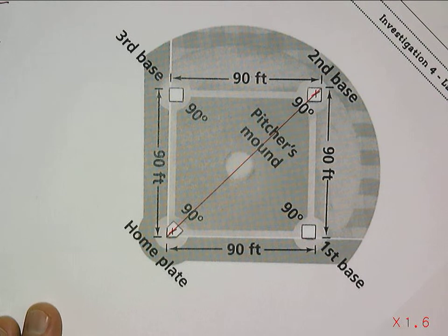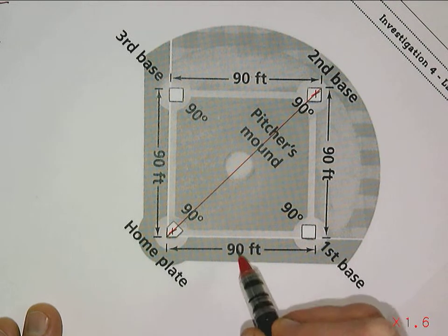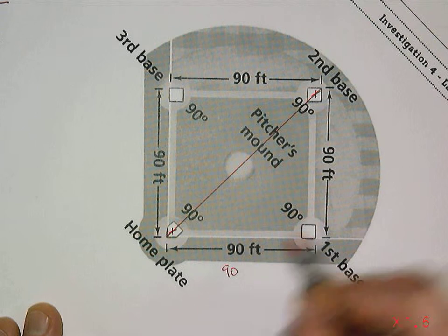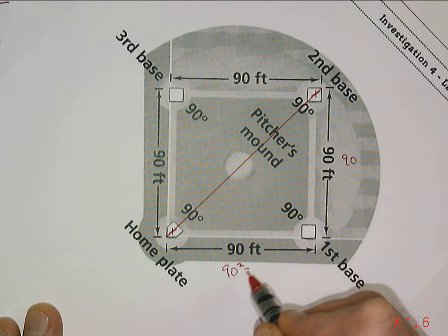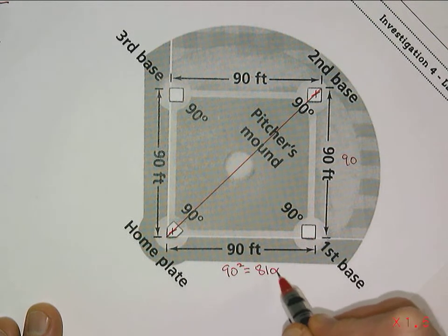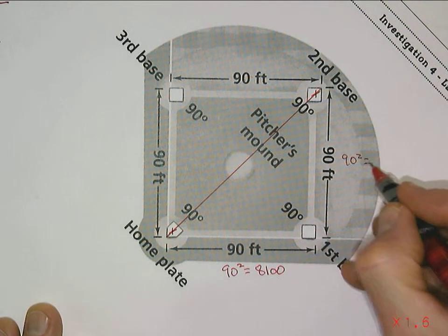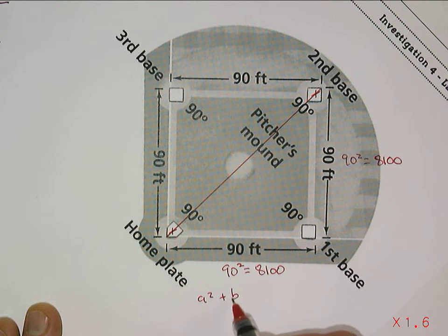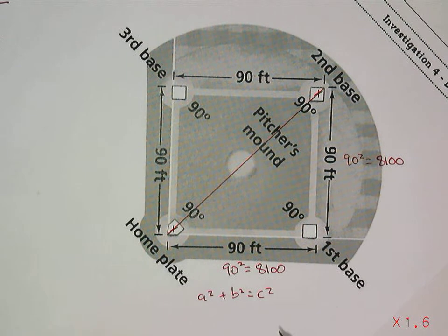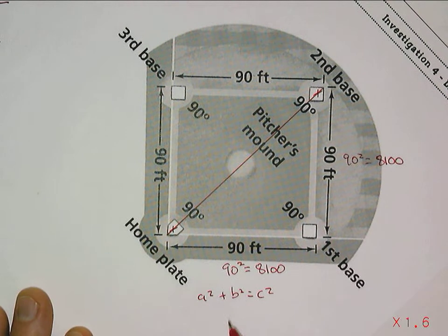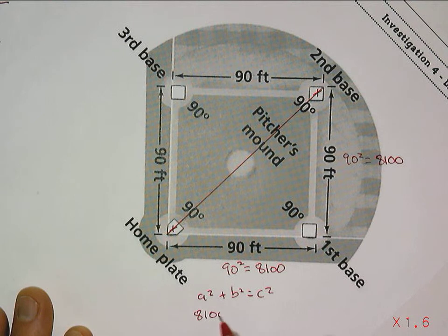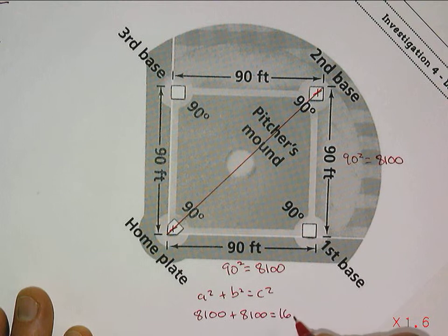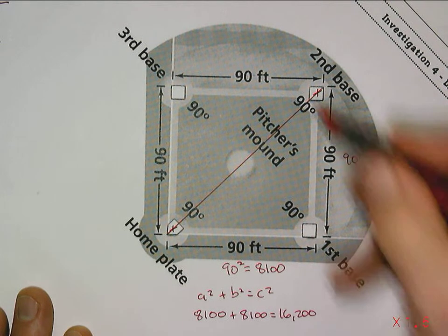One way to do this is simply to square both side lengths. We have 90 and 90 as our legs, so 90 squared is 8,100, and 90 squared is another 8,100. We're using the a squared plus b squared equals c squared idea of right triangles, or the Pythagorean theorem. Now we put them together: 8,100 plus 8,100 equals 16,200, which would be the c squared.